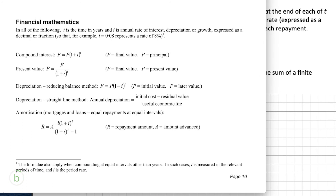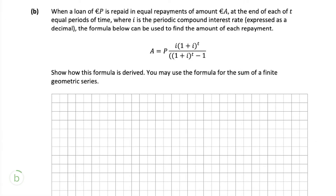If we go to the financial maths section of the log tables, we see there is a formula for present value: P = F over (1 + i)^t. We can use this formula to find the present value for each individual repayment — so the first would be a over (1 + i)^1, P₂ would be a over (1 + i)^2, and so on down to t.